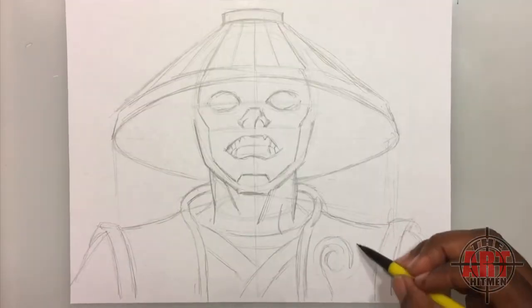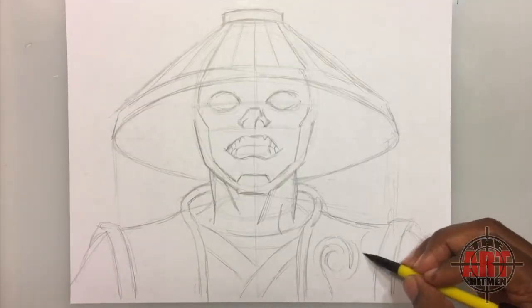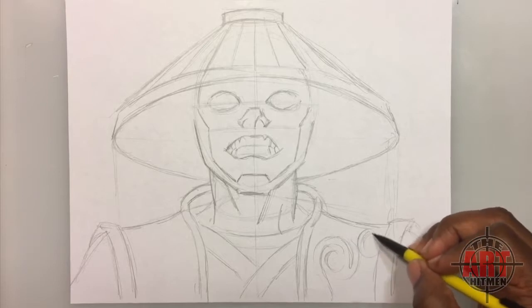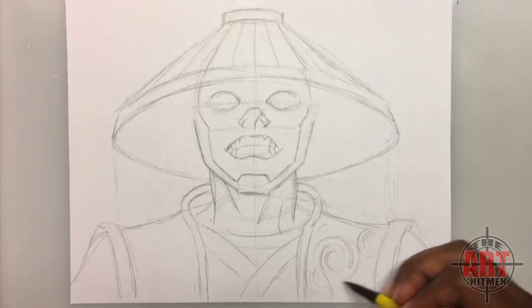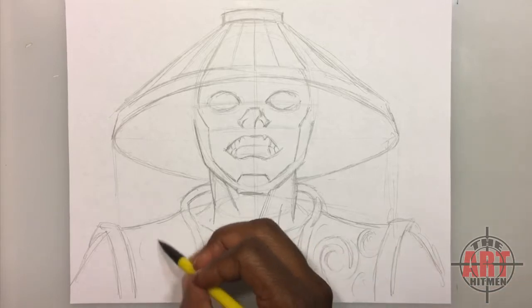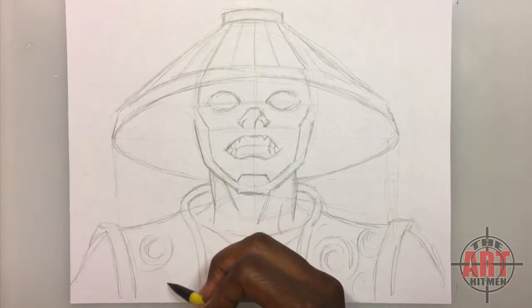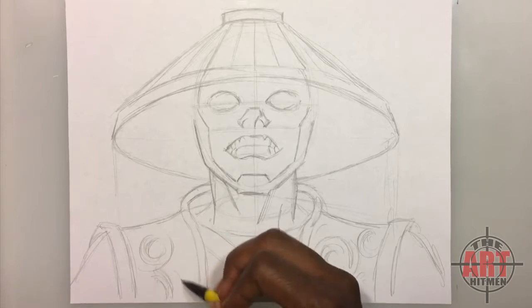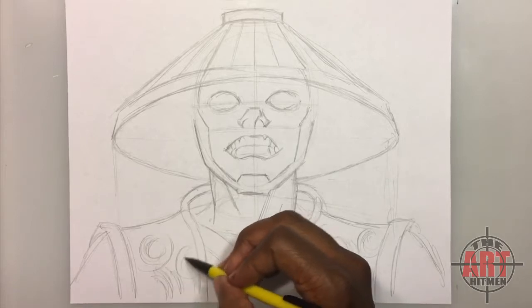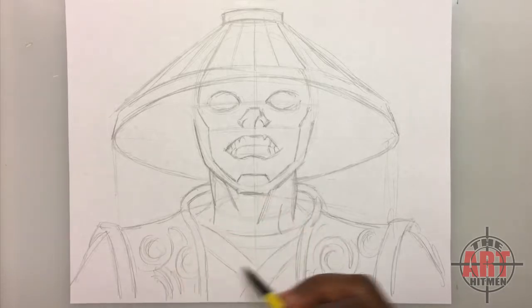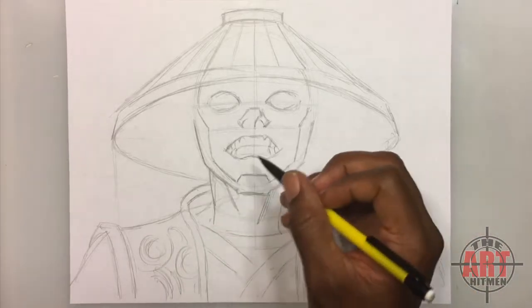So at this point I would say that Raiden has kind of like abstract circle arcs on his robe that he's wearing. So I would say put some arc shapes in, and then it kind of looks like a certain material that he's wearing, like a silk maybe.